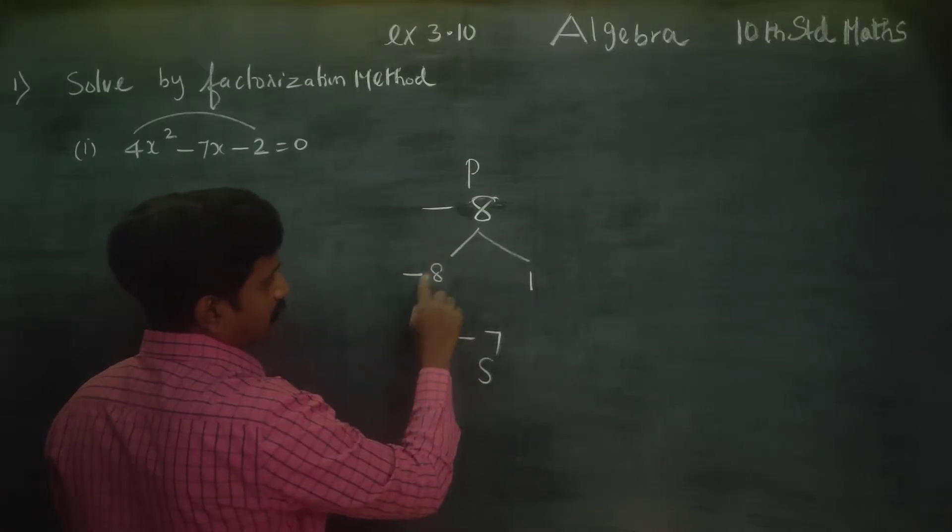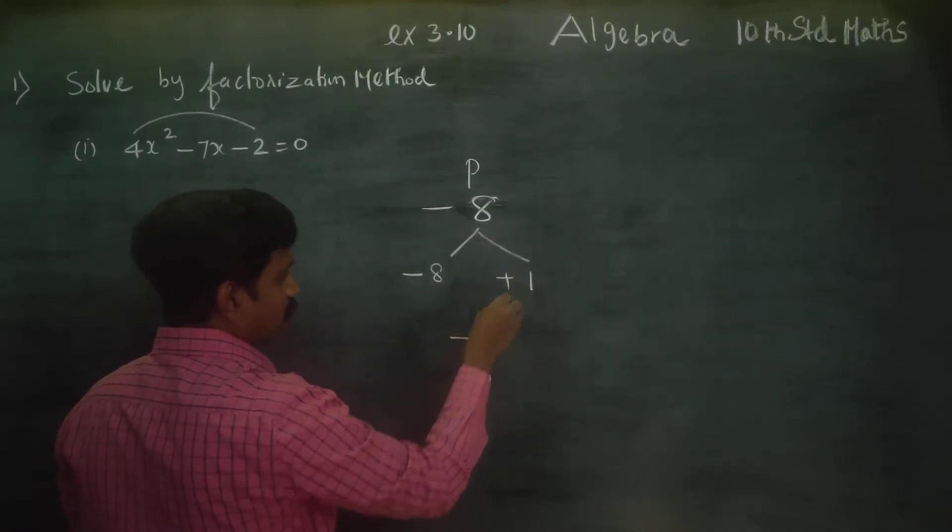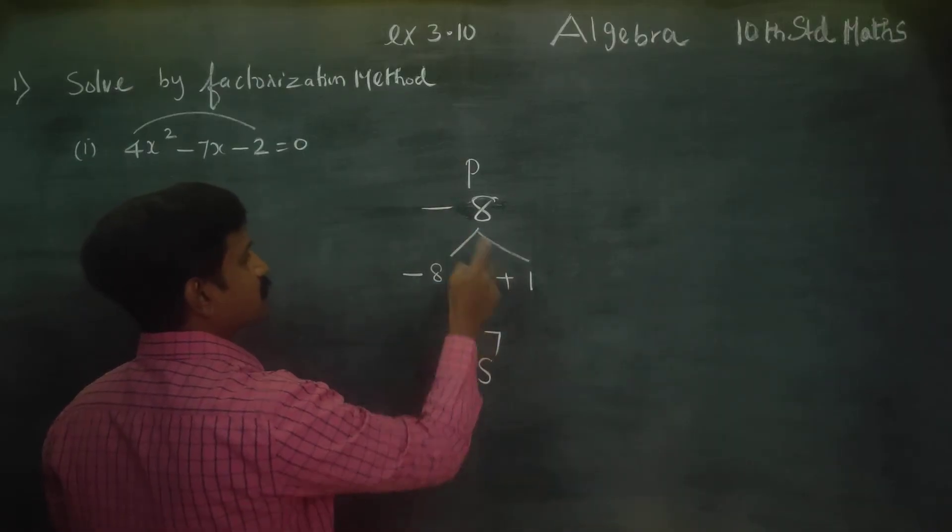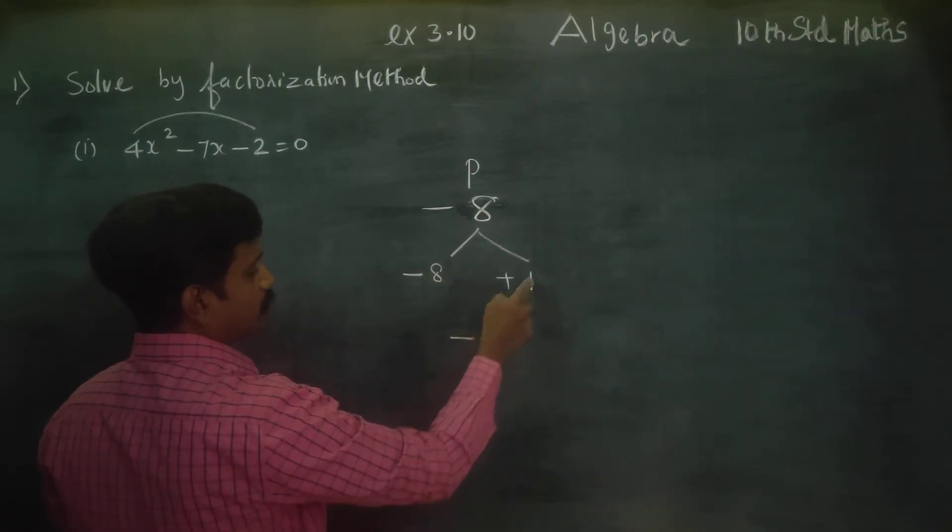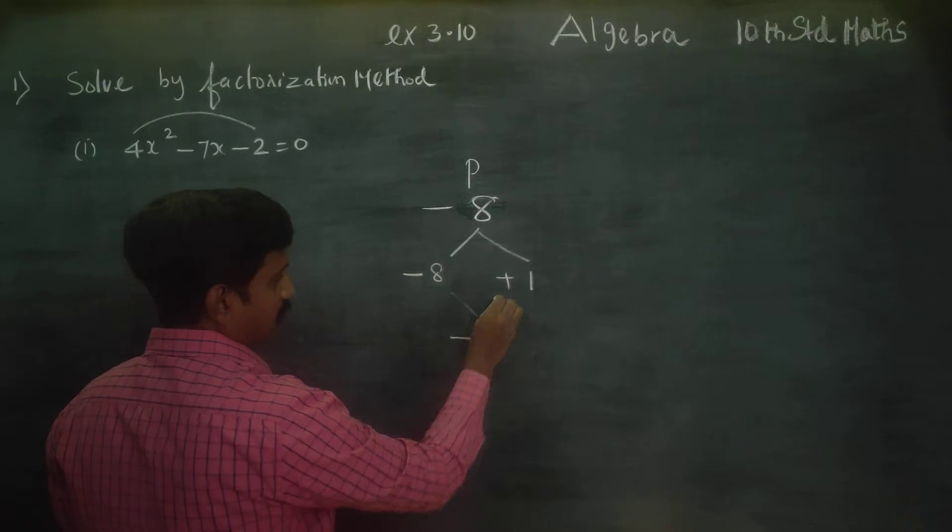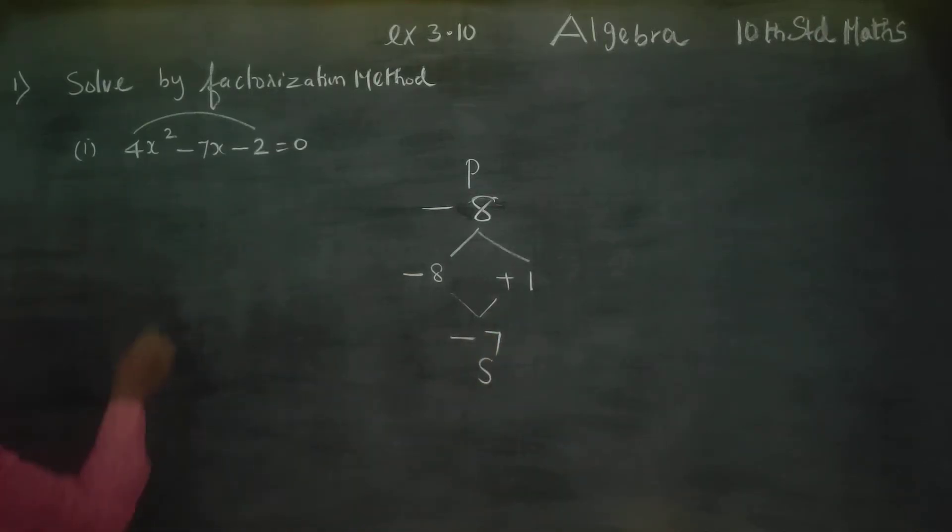Now minus 8, multiply by factorization, minus 1. Minus into plus is minus 8. 1 times 8 is 8. So you can check.